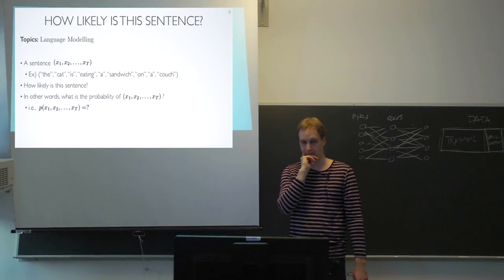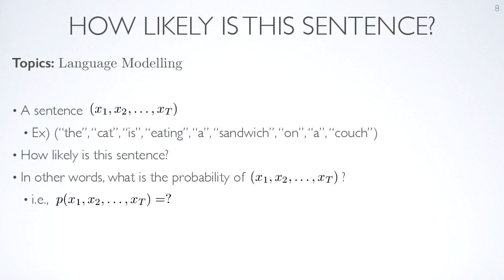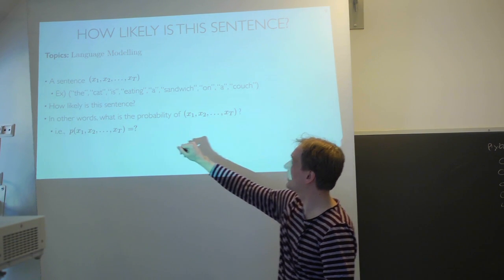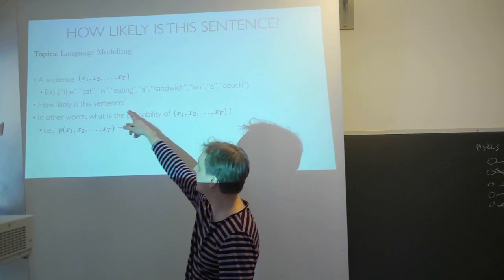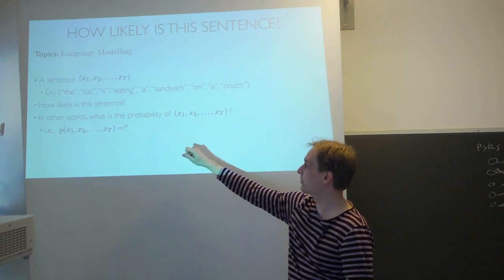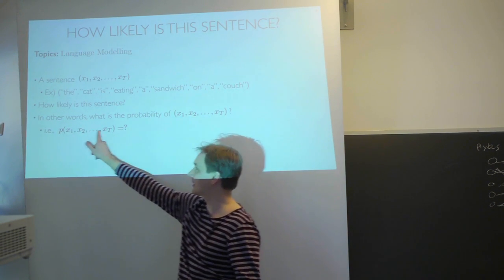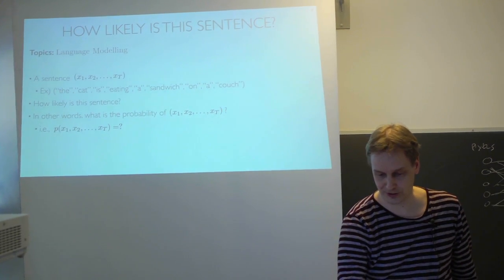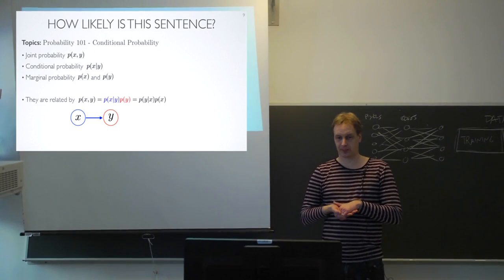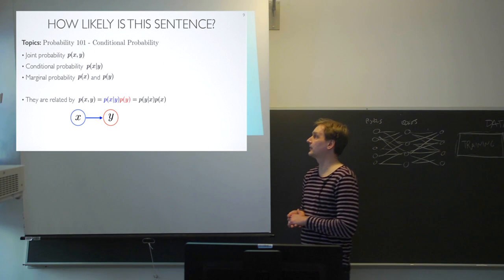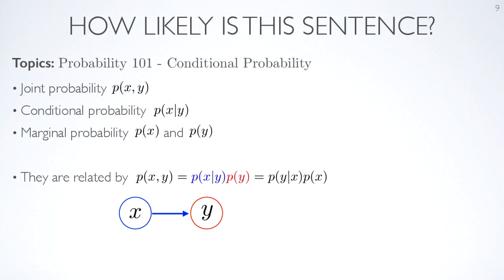So let's define some symbols here that the sentence, each word is X and the sentence might be the cat is eating a sandwich on a couch. And we ask how likely is the sentence? So what is the probability of seeing this sequence of words? So if we talk about probabilities, there are joint probabilities, conditional probabilities.